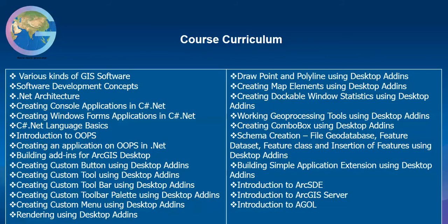The course content at Geosus is organized into five different levels: foundation level, basic level, intermediate level, advanced level, and implementation level. At the foundation level, we cover various kinds of GIS software and how developers use them, developer software available in the market, the software development lifecycle, waterfall model structure, .NET architecture, and how to create console, Windows Forms, and class library applications using C# .NET. We then start creating applications and building logic using C# .NET.